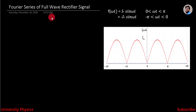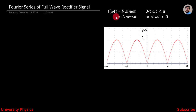Assalamu alaikum friends. Today we will learn about the Fourier series of full wave rectifier signals. It can be defined as: f(ωt) = I₀ sin(ωt) for 0 < ωt < π, and f(ωt) = -I₀ sin(ωt) for -π < ωt < 0.